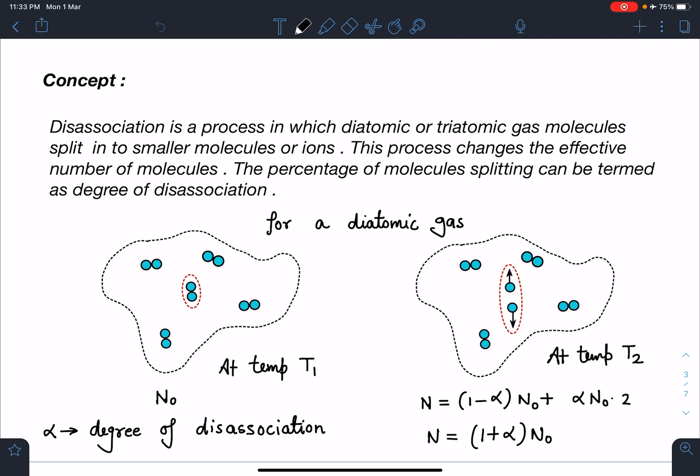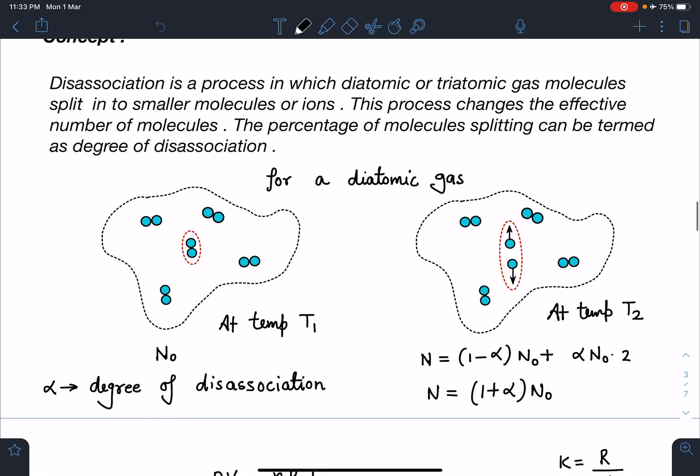The percentage of molecule splitting can be termed as degree of dissociation. Basically we are taking a fraction of molecules which is breaking from diatomic or triatomic gas into monatomic or ions.